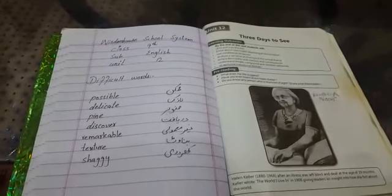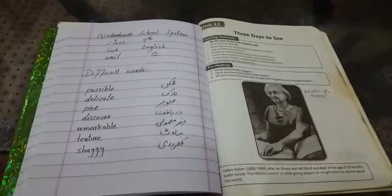Good morning students. It is a lecture for class 9th. Today we are going to learn about unit number 12. The topic of this unit is Three Days to See. And now today our lesson is here.